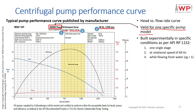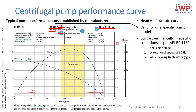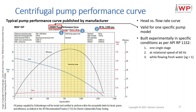This type of curve is valid for one specific pump model — in the example chosen, it is the pump AN 900. These curves are built experimentally per API Recommended Practice 11S2: using a single-stage pump, at a rotational speed of 60 Hz (corresponding to 3500 RPM), while flowing fresh water with a specific gravity equal to 1.